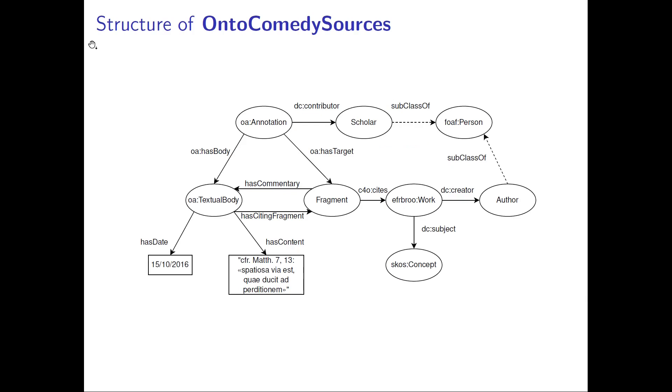To explain the connection between a text fragment and the literary or iconographic source it refers to, we use the class annotation. Every annotation is written by a specialized scholar, and in our ontology, we specify this fact with the property contributor. The association between a fragment and the work cited in it is modeled by the property cites, whose range is the class work. In its turn, such a class is paired with the class author through the property creator, and with the class concept via the property subject.